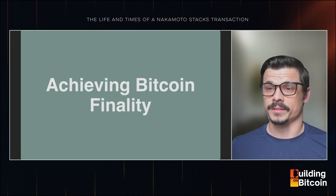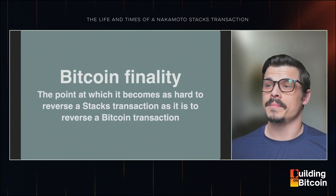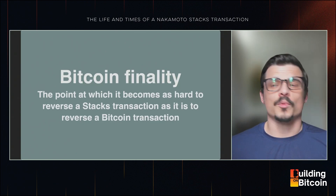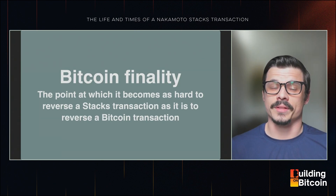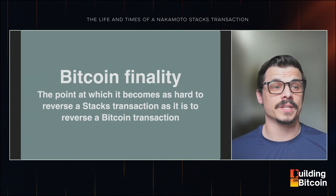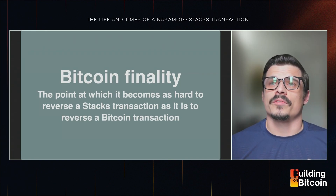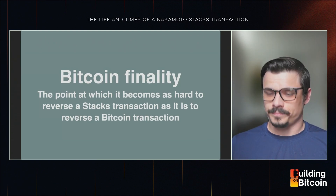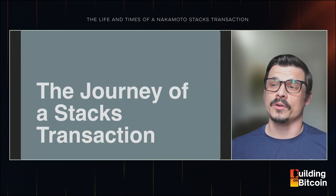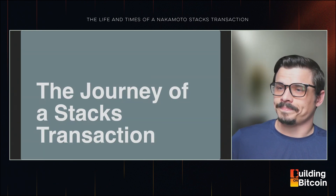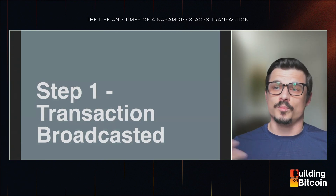Accomplishing both of these things means we can create an L2 that achieves the security of Bitcoin while having the speed of a faster chain like Solana. The way I like to define Bitcoin finality is: the point at which it becomes as hard to reverse a Stacks transaction as it is to reverse a Bitcoin transaction. That's really how I think about Bitcoin finality in the context of Stacks.